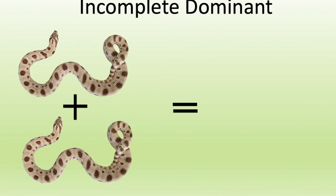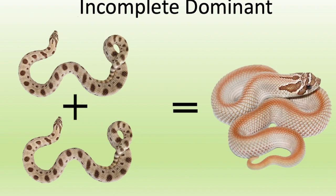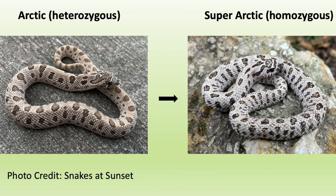Looking at this example, we have two parents that both carry the anaconda gene, and the super form is the super conda. Going back to the flower analogy, the super conda does not look like either parent — it doesn't have any pattern — and that's what makes it incomplete dominant.